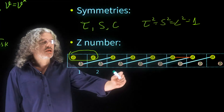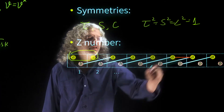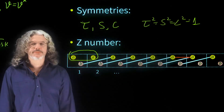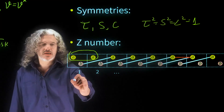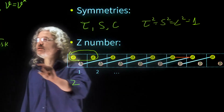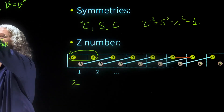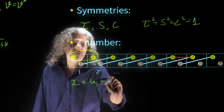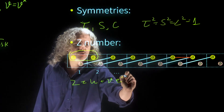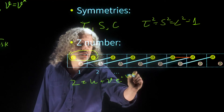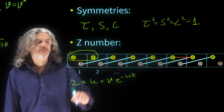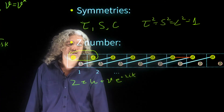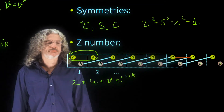As long as we keep the sub-lattice symmetry — not allowing coupling between two A's — we formally write Z equal to U plus V e to the minus 2ik instead of e to the minus ik. So as k goes from zero to two pi, Z winds twice around the origin, that is, if V is larger than U.